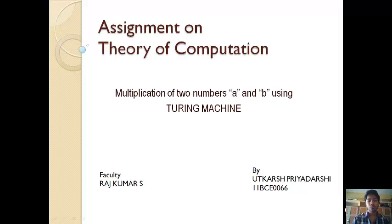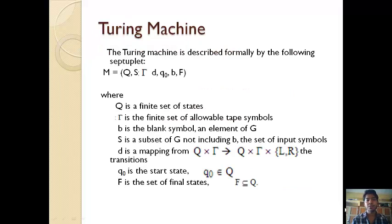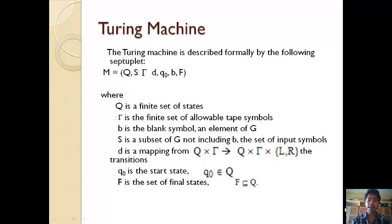So what is a Turing machine? It has been explained in class but I am just here to recollect information. A Turing machine is described formally by the following: M is equal to Q, S, Gamma, Delta, Q naught, B and F. Where Q is the finite set of states. Gamma is the finite set of allowable tape symbols, i.e. the language.